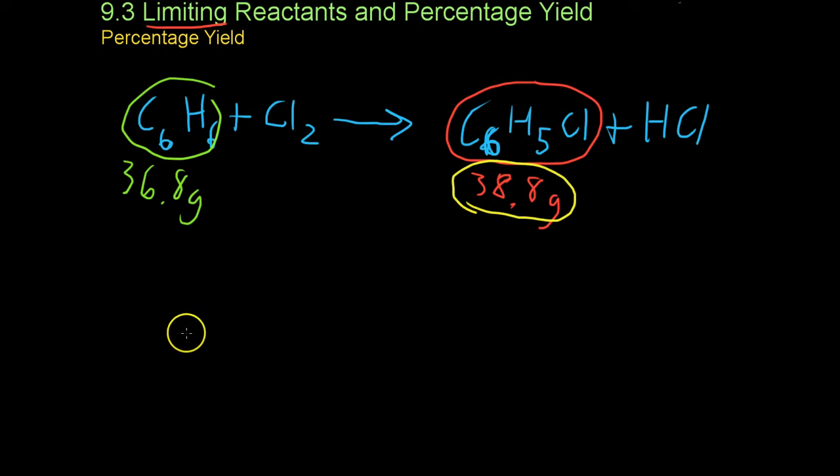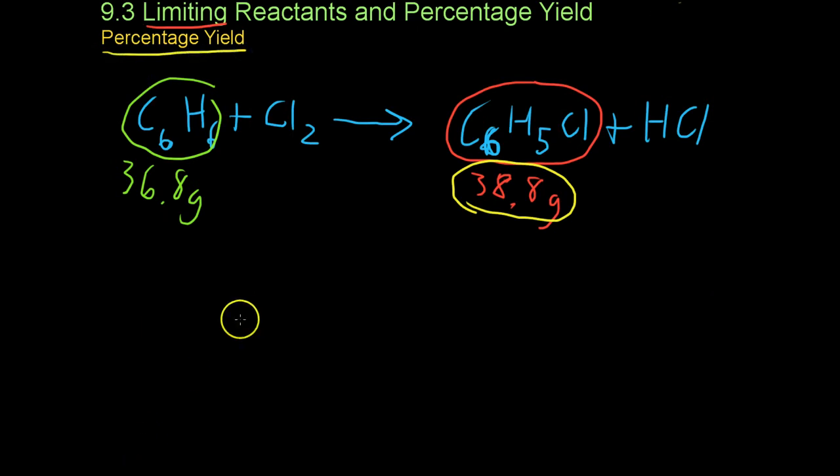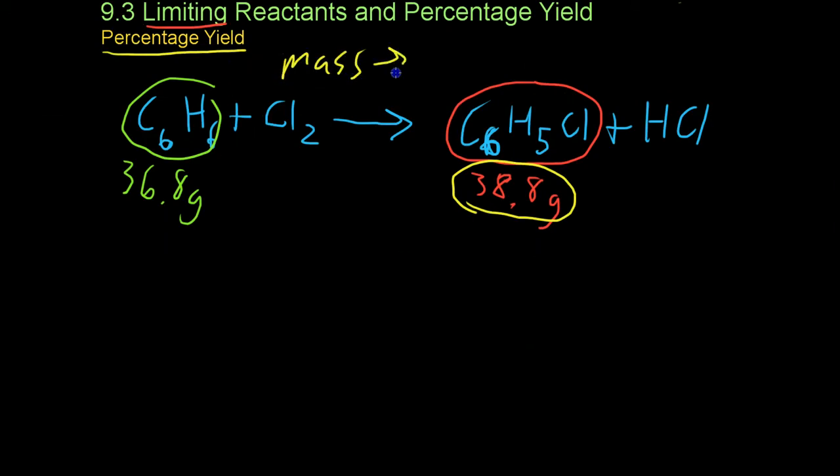Now we have to take steps to find the theoretical yield if we're going to calculate the percentage yield, because it's a ratio of the actual to the theoretical. The theoretical yield is a simple mass to mass stoichiometry problem.